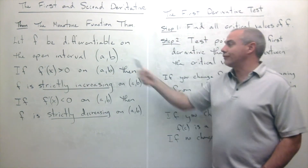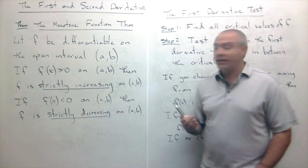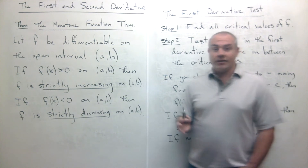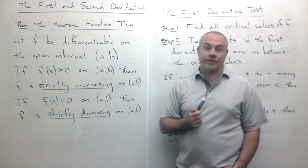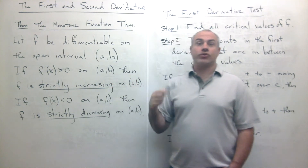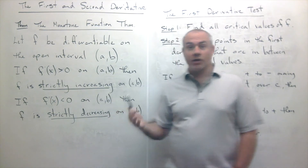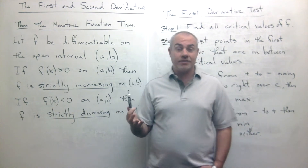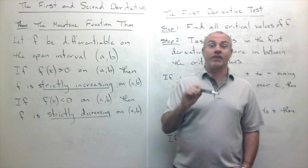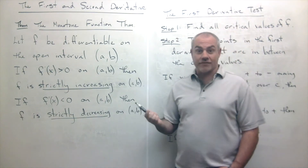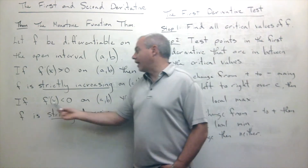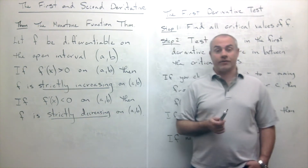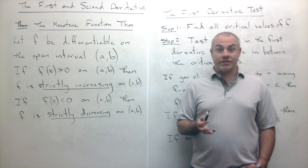The Monotone Function Theorem says that if f is differentiable on the open interval (a, b) — in other words it has a derivative — and if the derivative is always positive on that interval, then we can conclude that it's strictly increasing on the interval. Going up translates to having positive derivatives. That's not so surprising when you think about the tangent lines associated with something moving up from left to right — they all have positive slopes. Similarly, if the derivative is always negative on that interval, then f is strictly decreasing.